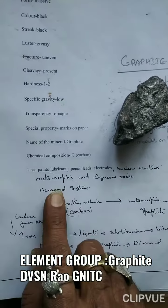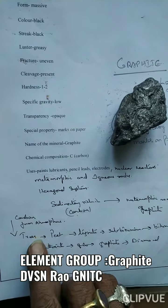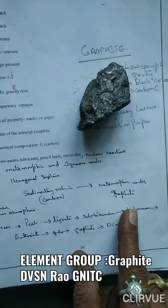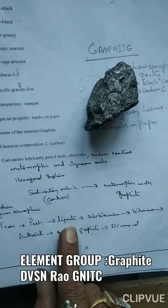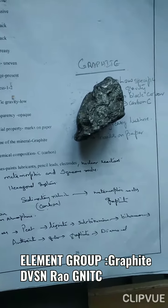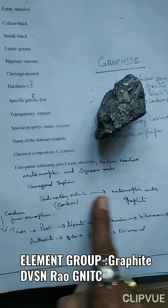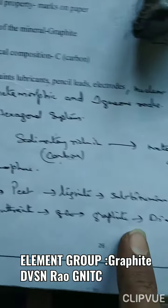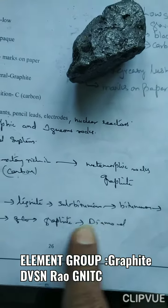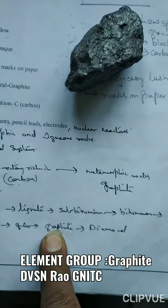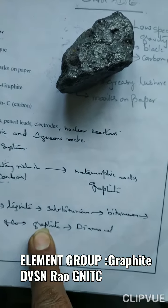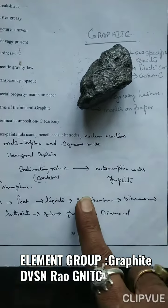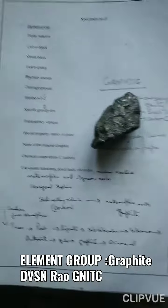Carbon transforms from amorphous carbon in trees to peat, peat to lignite, lignite to sub-bituminous, sub-bituminous to bituminous, bituminous to anthracite, anthracite to graphite, and graphite to diamond. So diamond is also C and graphite is also C — same chemical composition. This is called polymorphism.